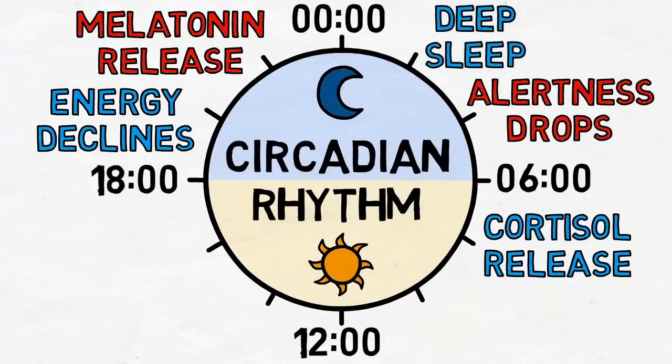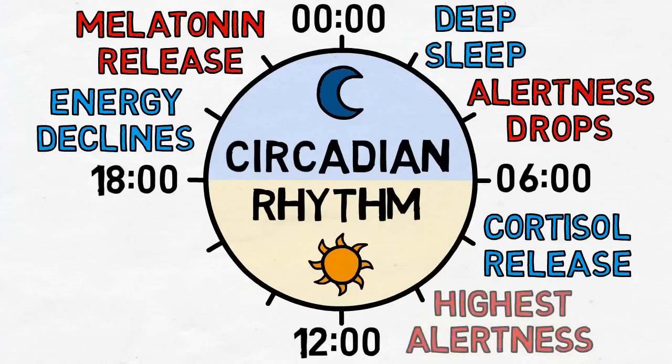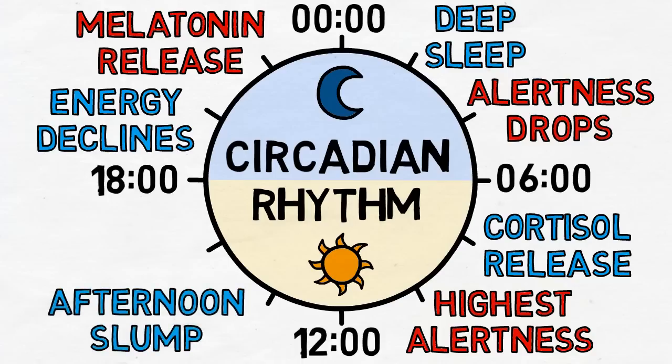However, upon awaking, our energy and alertness steadily increase over the course of the day, until they reach a peak in late morning. That's when we tend to be at our cognitive best. But that peak is then followed by an afternoon low, which we call the afternoon slump.